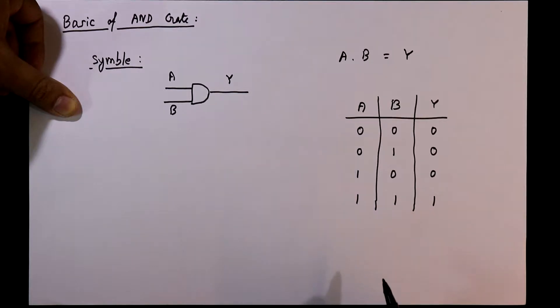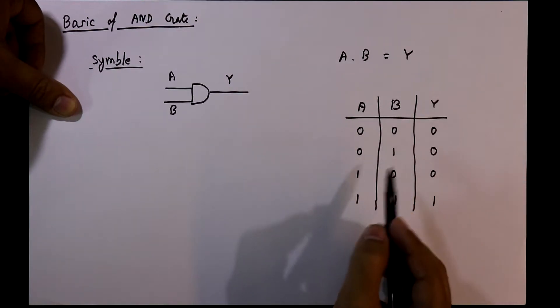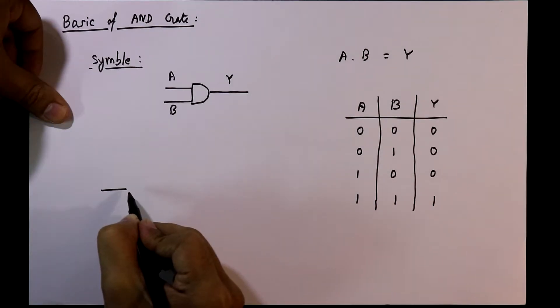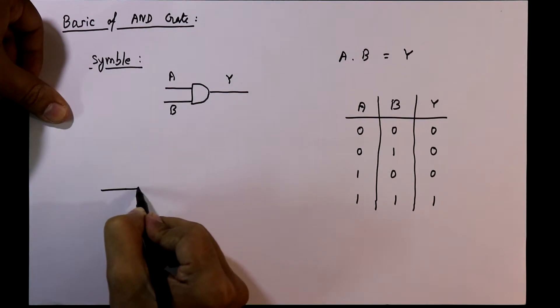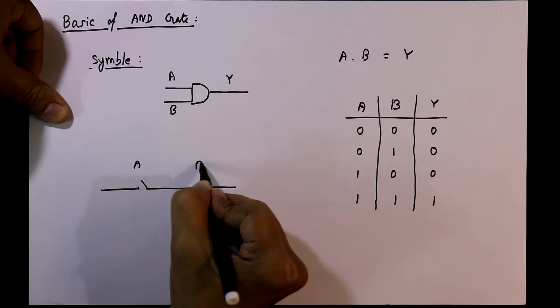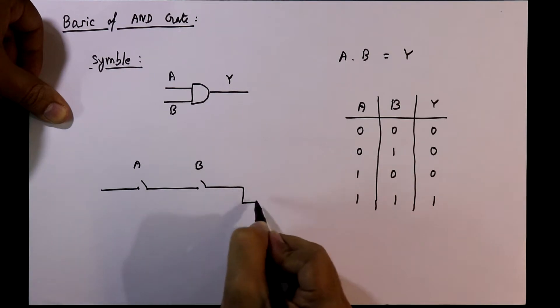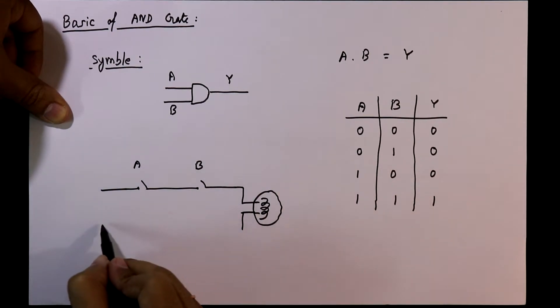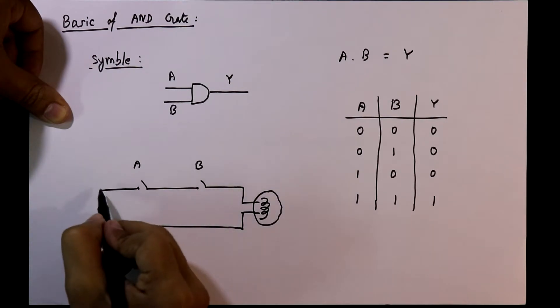0 means off and 1 means on, and we will verify this truth table with basic switches. Here I have taken two switches, switch A and switch B. After the switches, we'll connect a bulb. The other pin of the bulb is connected to the ground or negative.